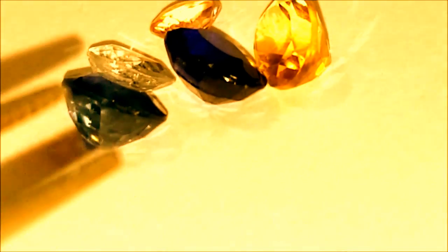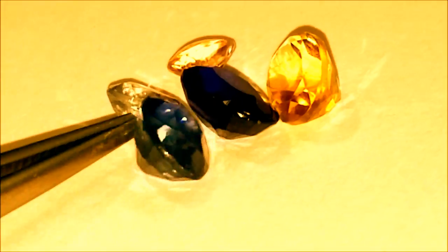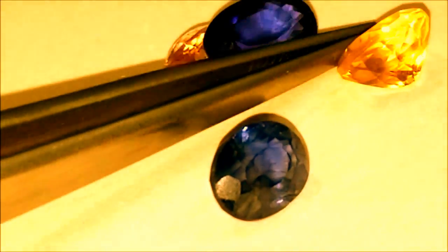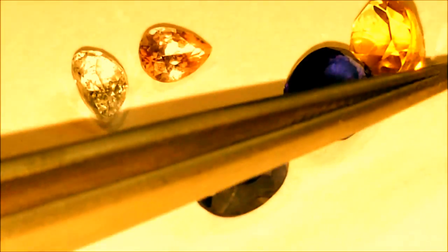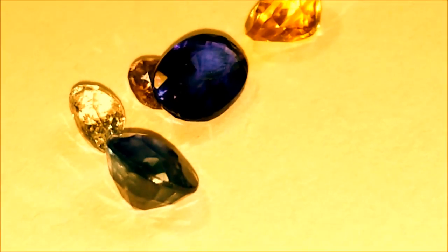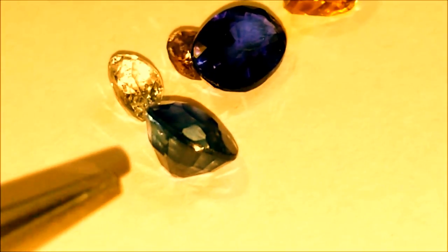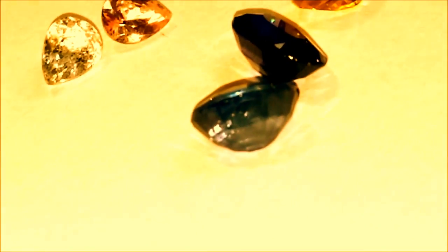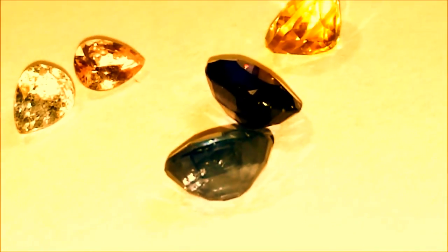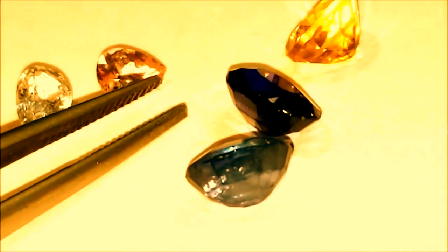So overall, using our test, we were able to determine that this stone, this stone, and this stone are indeed corundum, they're indeed sapphires, but they're not natural. We were able to determine that this stone is not sapphire at all, and that these two right here are completely natural sapphires. I would go ahead, and if these were higher quality stones, I would test them.